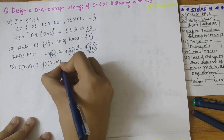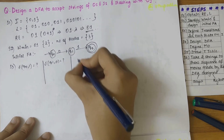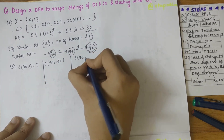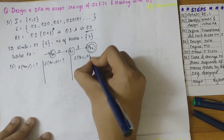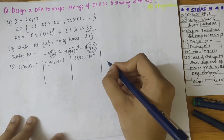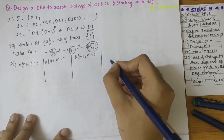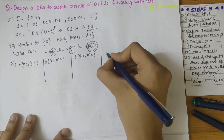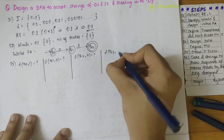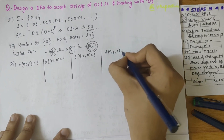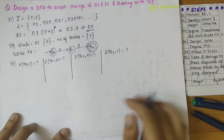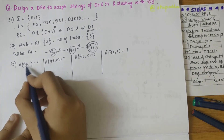Similarly, q1 on 0 is unknown, q2 on 0 is unknown, q2 on 1 is unknown, q3 on 0 is unknown, and q3 on 1 is unknown. Let's solve these one by one.